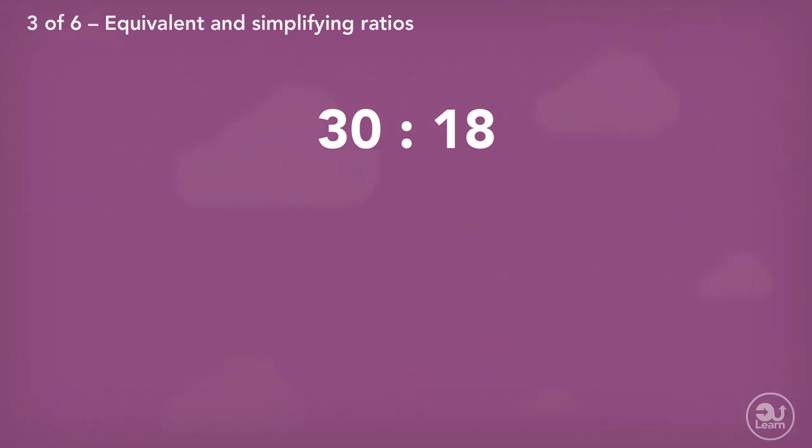You don't necessarily have to simplify this way. You could have divided 30 to 18 by three first, and then two after. Or you could have simplified in one step by recognizing the two values can be divided by six. Regardless, the final simplified ratio is still five to three.